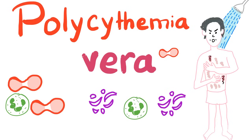Today let's start with polycythemia vera. Let's break this down. What does poly mean? Poly means numerous, lots of. Cythemia: emia means blood and cyte is the cell. So, many cells in the blood. And vera means true — it's a Latin word. True increased blood cells.